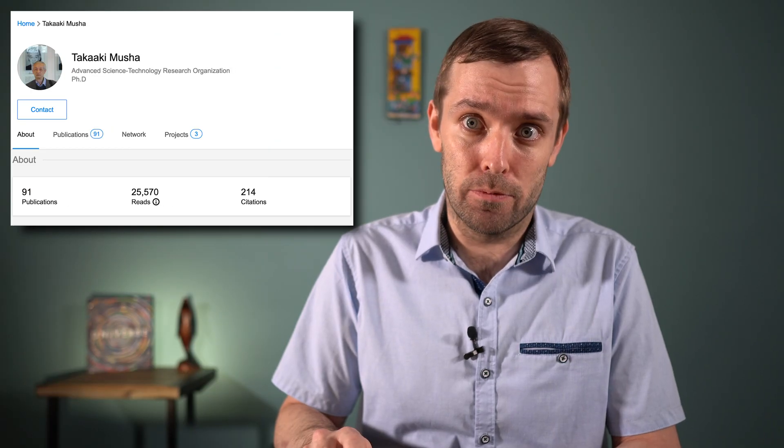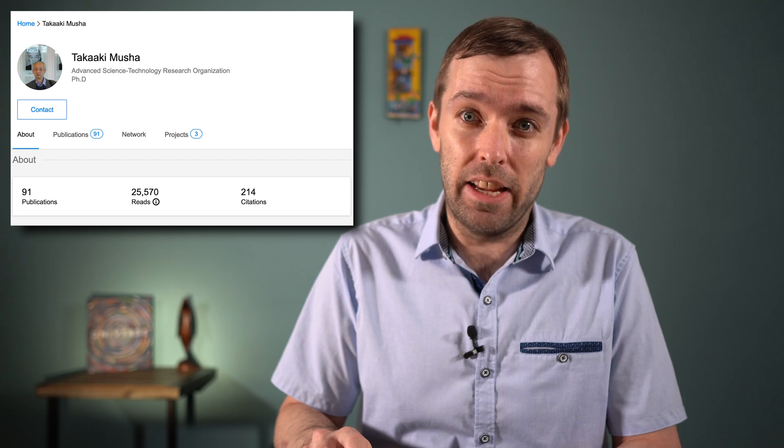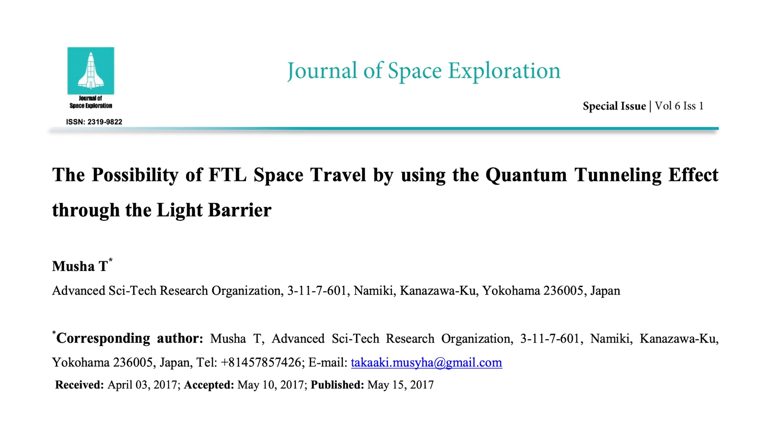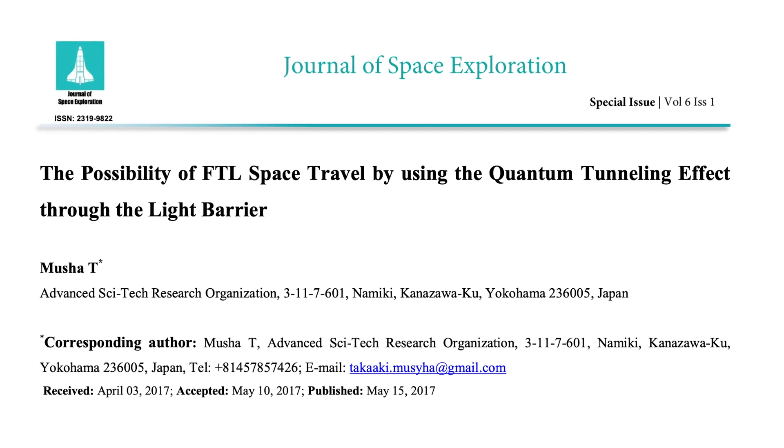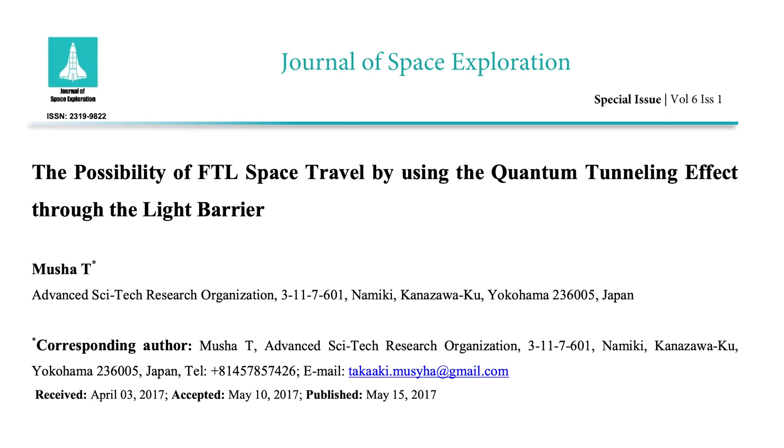An alternative was proposed by Takaki Musha from Japan's Shinshu University. He outlines his theory of faster-than-light travel in his 2017 paper, 'The Possibility of FTL Space Travel by Using the Quantum Tunneling Effect Through the Light Barrier.' This method takes the relativistic obstacles head on. If correct, it's possible to accelerate so fast that you'd fly right through the light barrier, coming out the other end literally traveling faster than the speed of light.